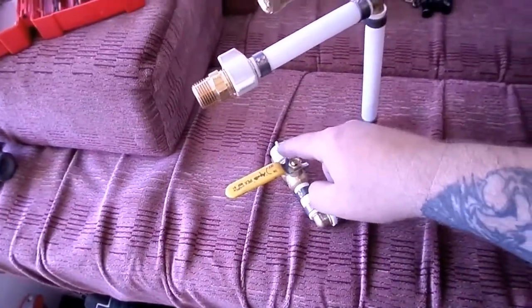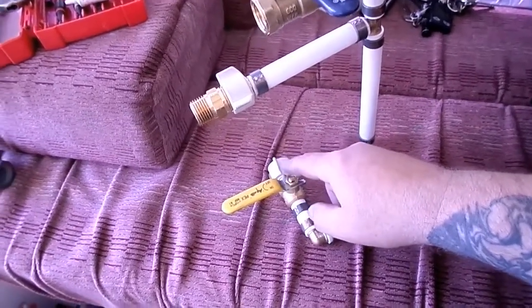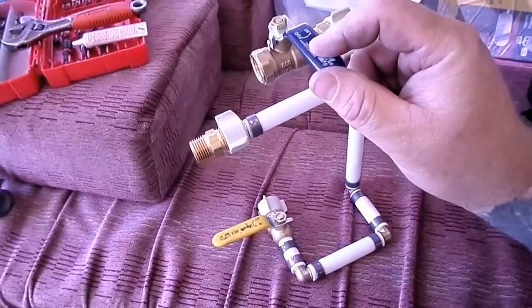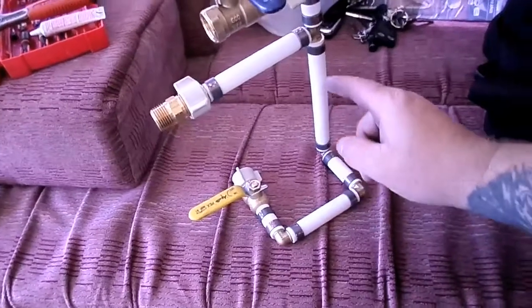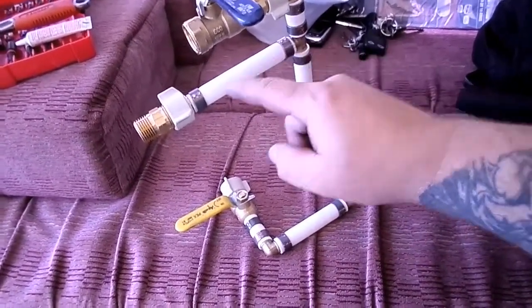So basically, this is all half-inch PEX, and these are just half-inch crimp pieces. You can see that's what they are there.